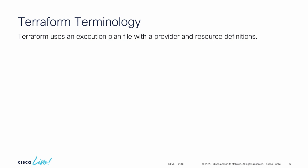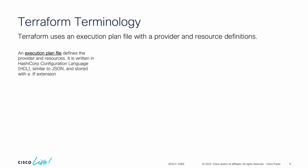Let's get a little bit deeper into the Terraform terminology. First, we have a provider, and our provider has a few different resource definitions. We have an execution plan file, where we store everything that we're going to be doing in Terraform — all of it will be in a file or multiple files. This is written in HashiCorp Configuration Language, or HCL. And if you're familiar with JSON, it's pretty much the same formatting, but we have a .tf extension instead of .json.